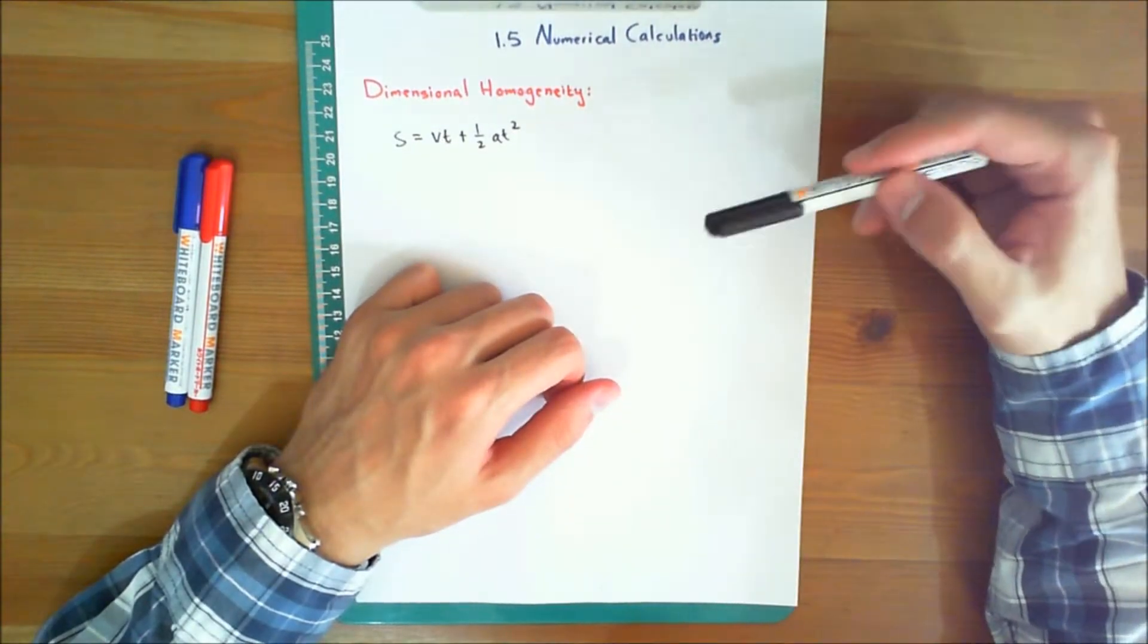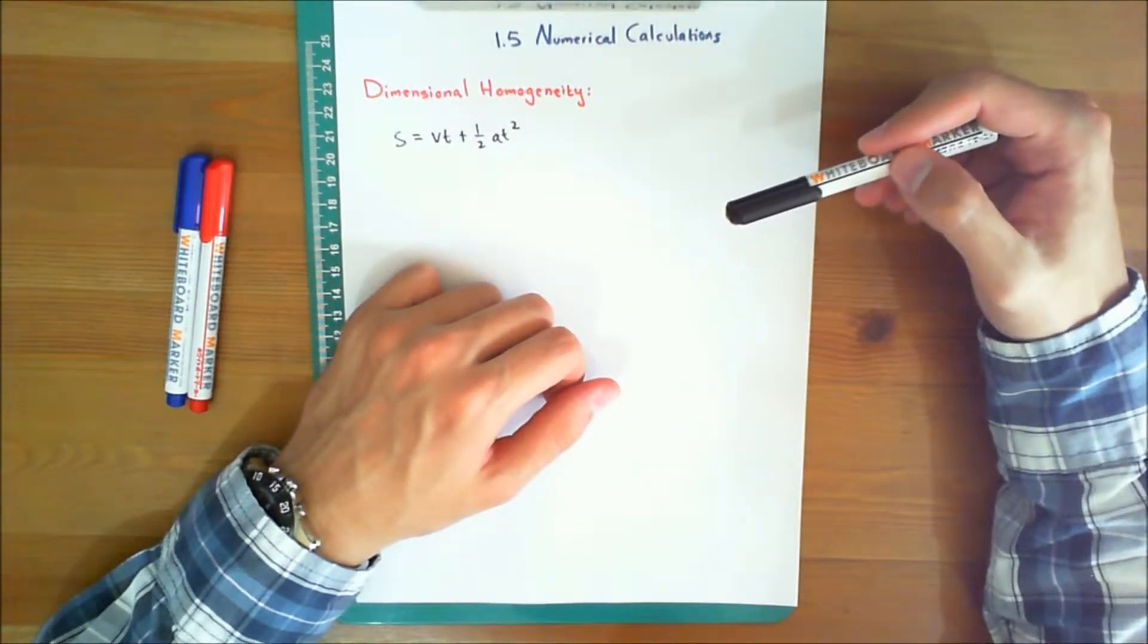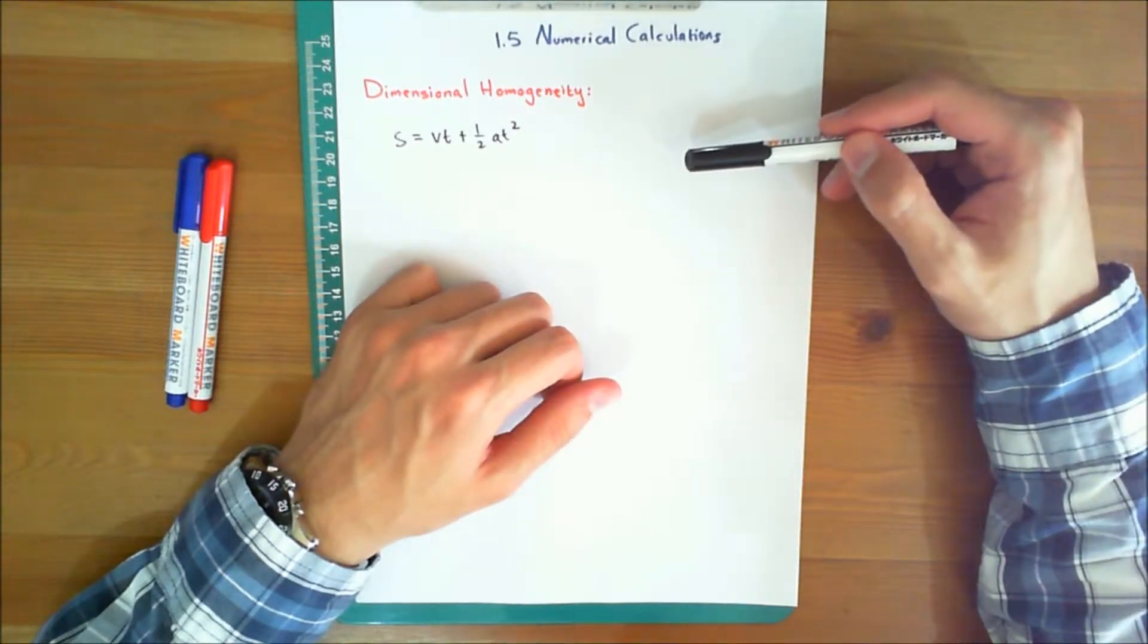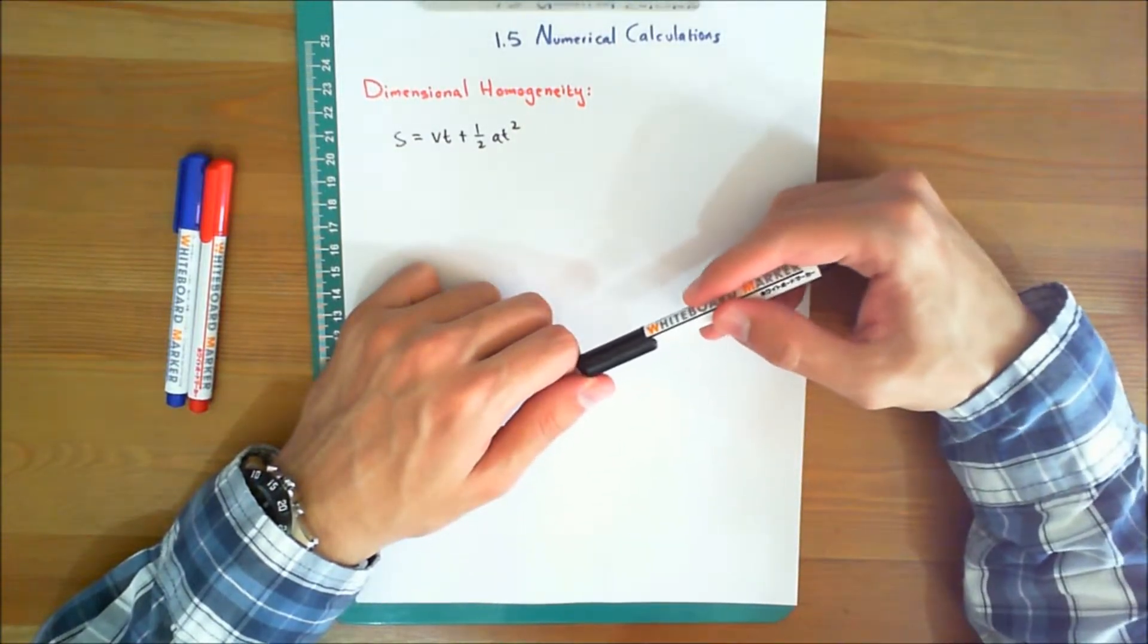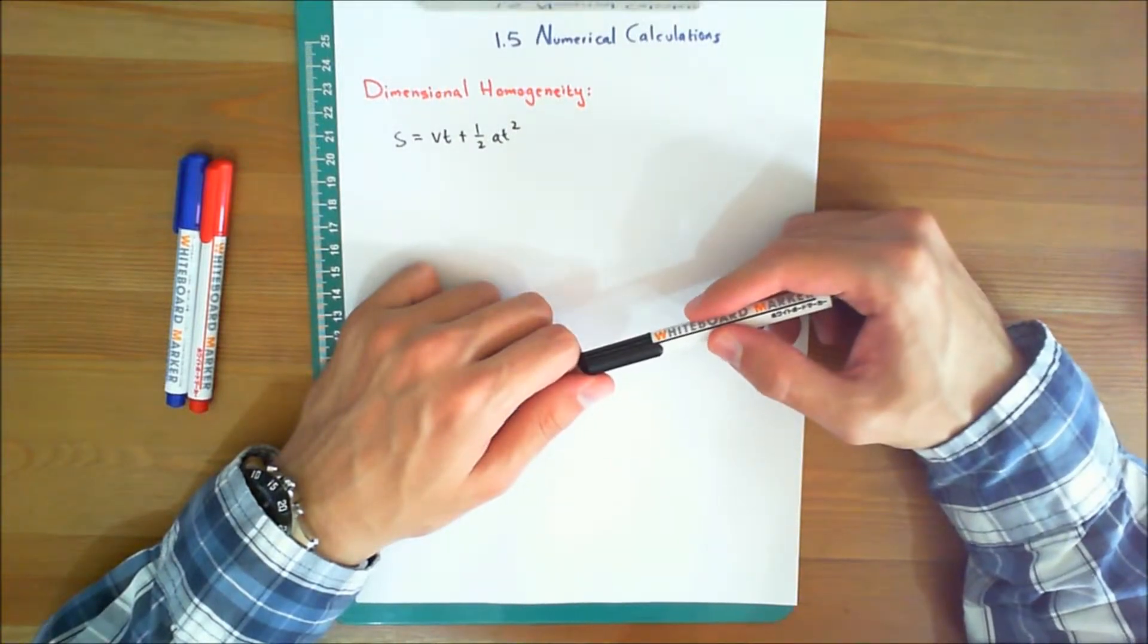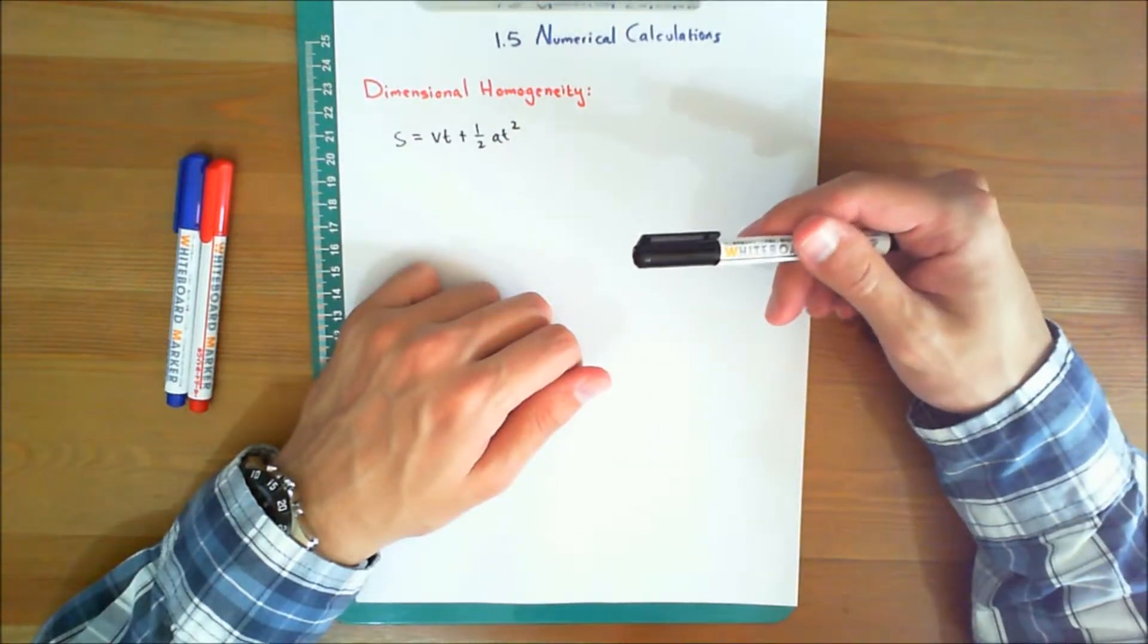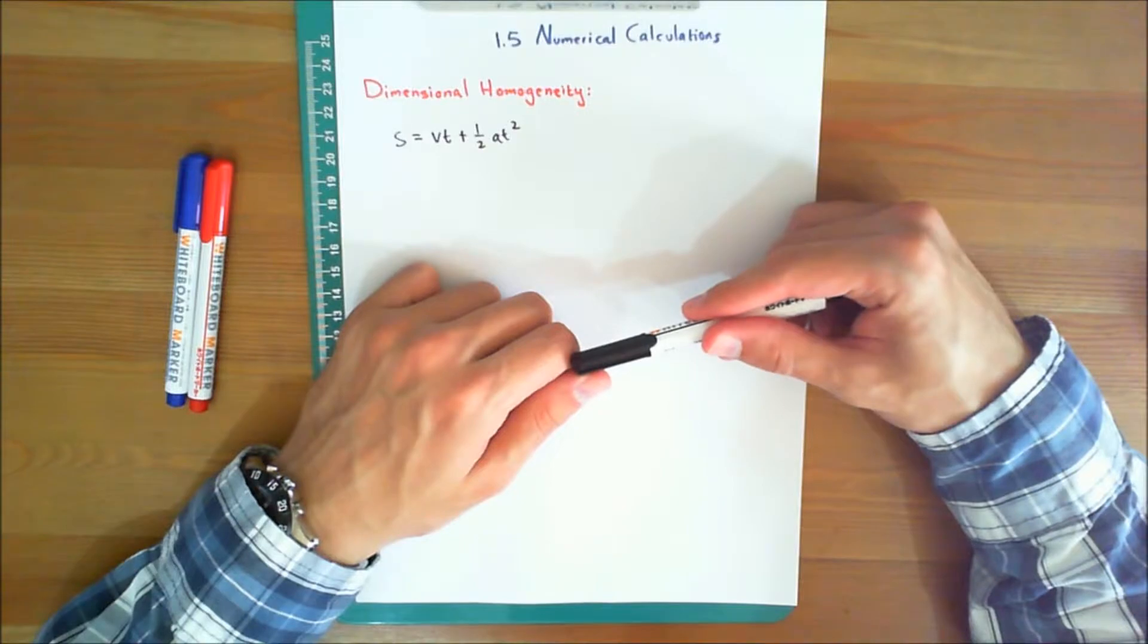Numerical calculations. Numerical work in engineering practice is most often performed by using handheld calculators and computers. It is important, however, that the answers to any problem be reported with both justifiable accuracy and appropriate significant figures. In this section, we will discuss these topics together with some of the other important aspects involved in all engineering calculations.